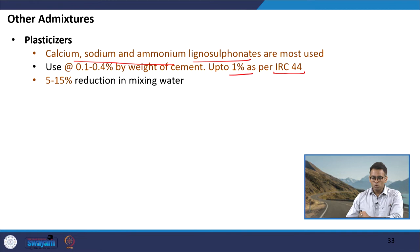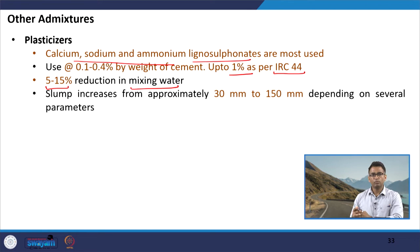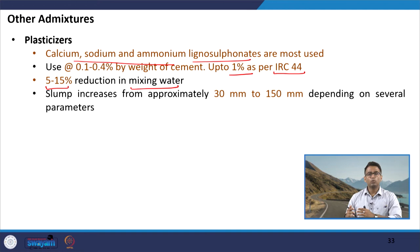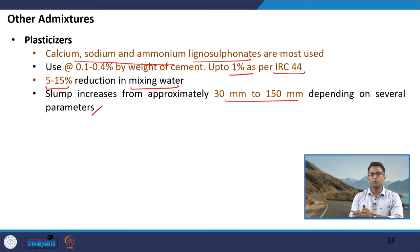For the same workability, the amount of water that can be reduced ranges from 5 to 15 percent depending on the type and dosage of plasticizer. As workability improves with plasticizer addition, the slump naturally increases — typically by about 30 mm to 150 mm compared to the standard slump, depending on the type and amount of plasticizer and other mixture properties.